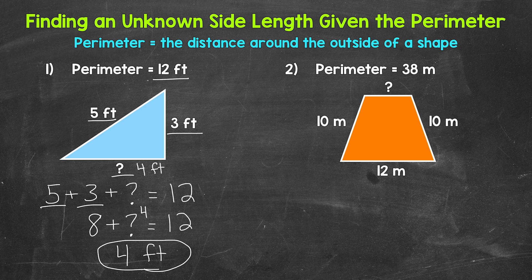We can check by plugging four feet back in: five feet plus three feet is eight feet, plus four feet gives us that perimeter of 12 feet. So we are good to go.